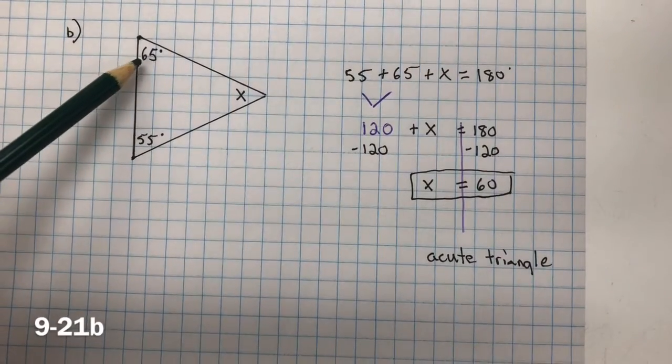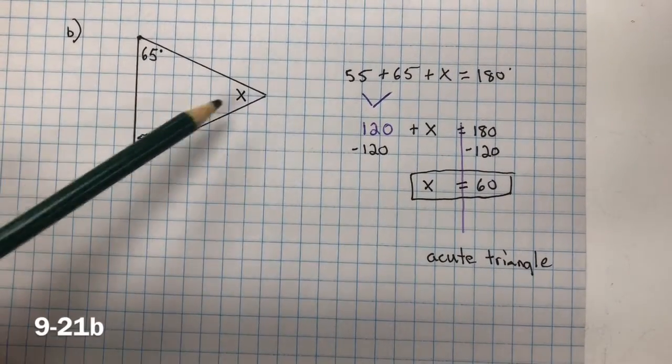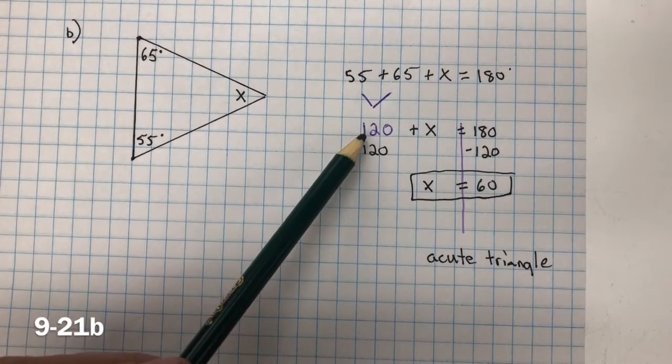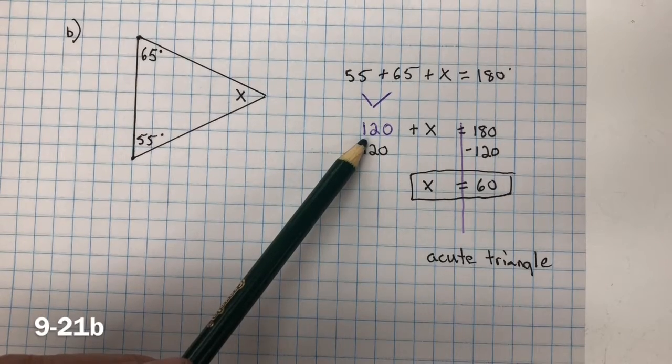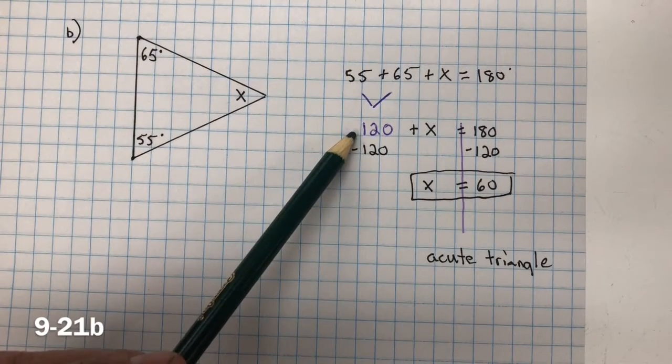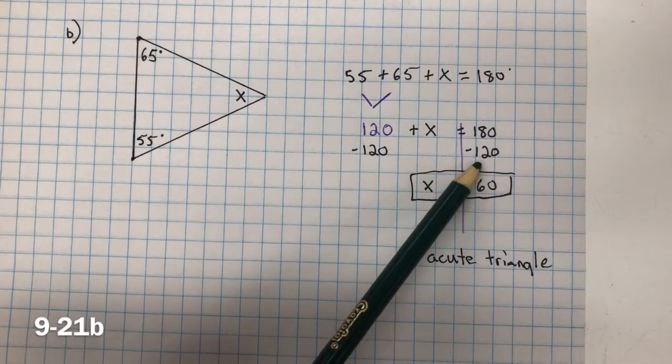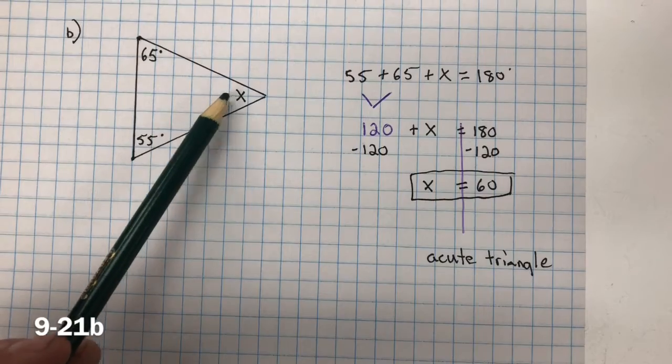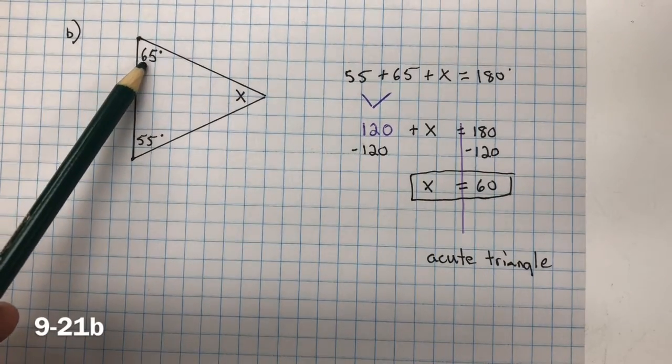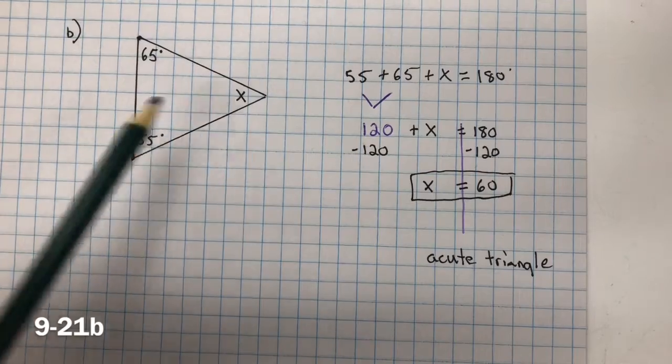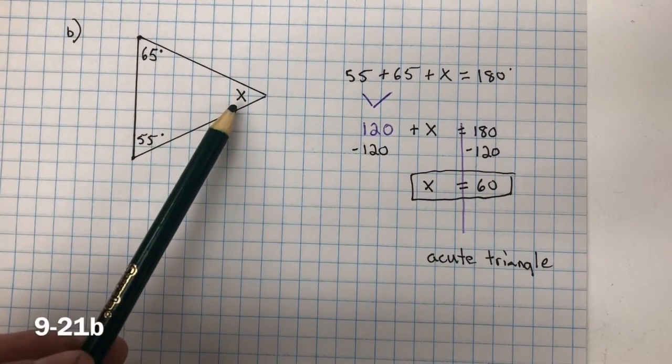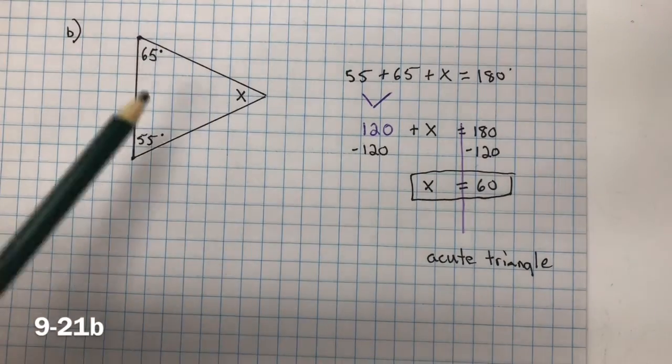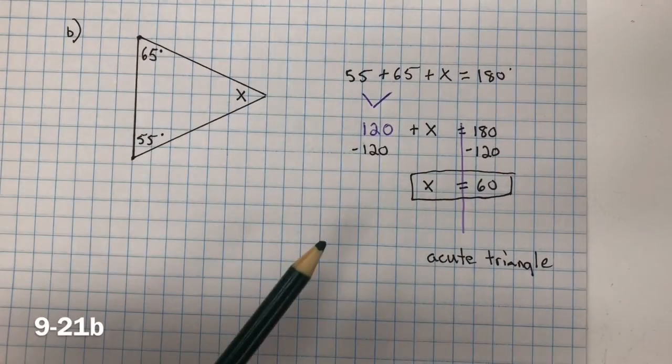For B, we have 65 plus 55 plus x will equal 180 degrees. Combine like terms, 55 plus 65 is 120. Inverse property of addition is subtraction. Subtract 120 from both sides, and we get x equals 60. Just to make sure you did it correctly, you should add 65 plus 55 equals 120 plus 60 equals 180. The greatest measure is 65 degrees. This is an acute triangle.